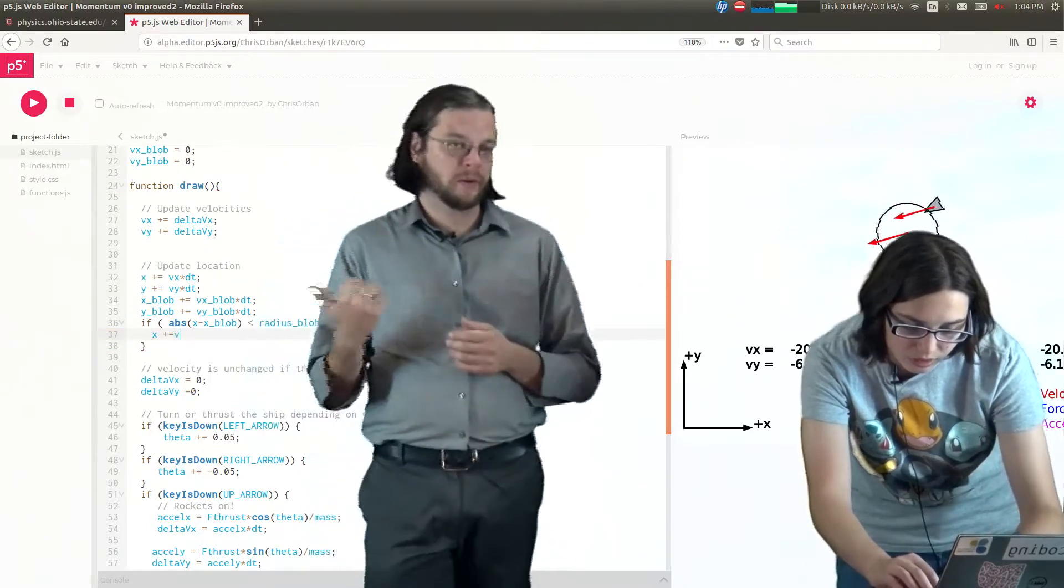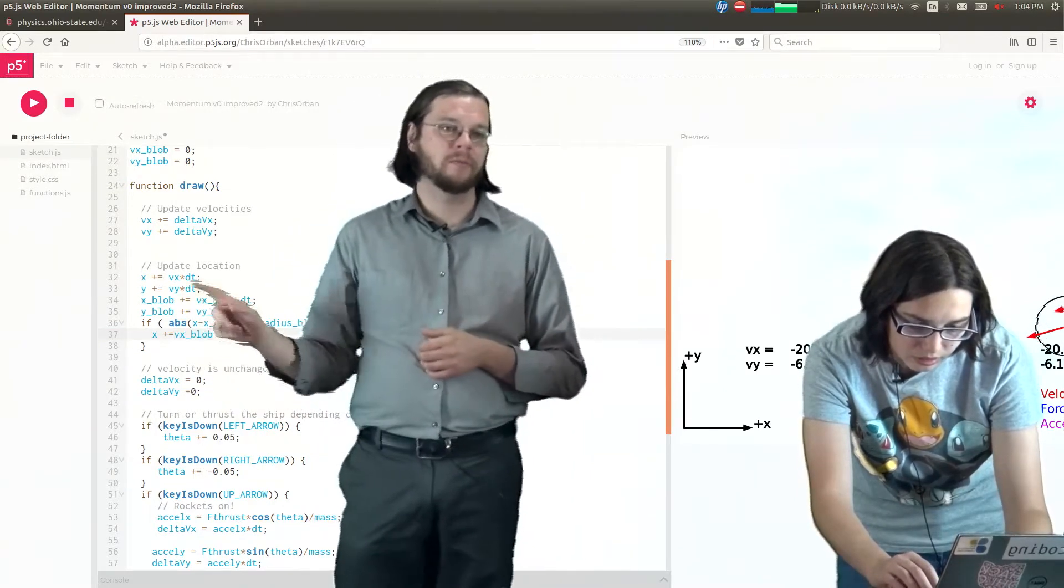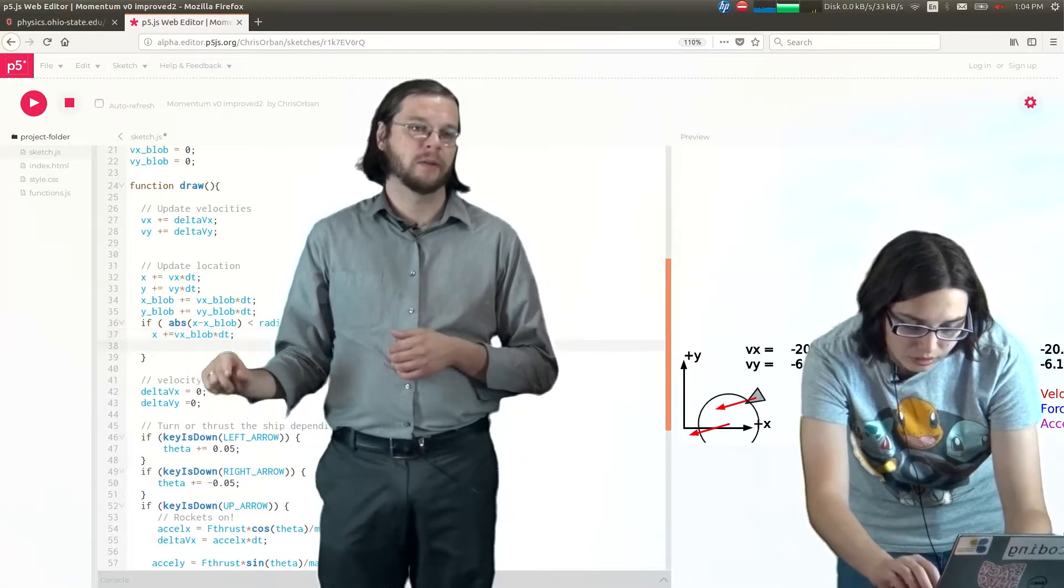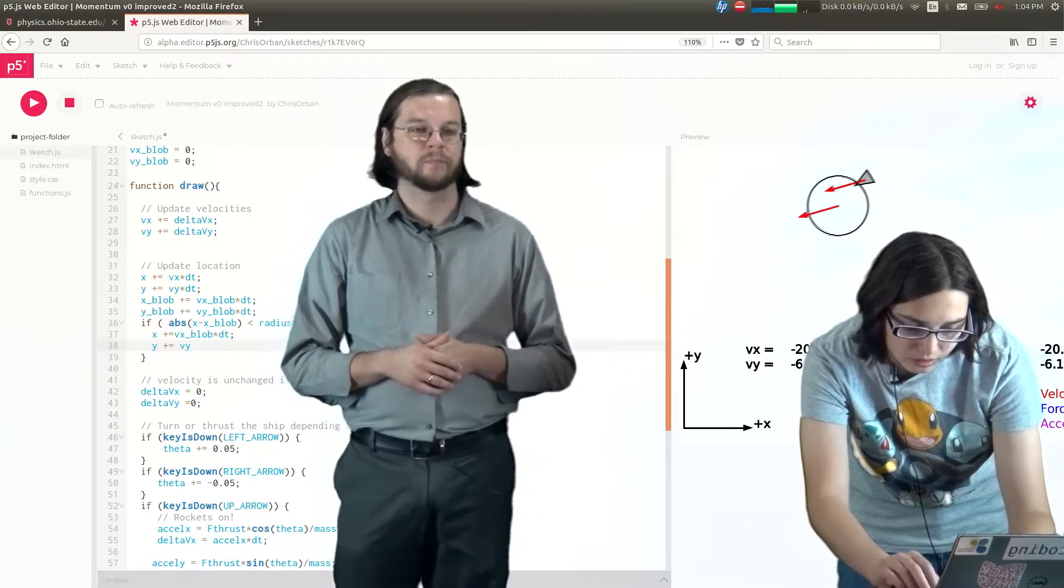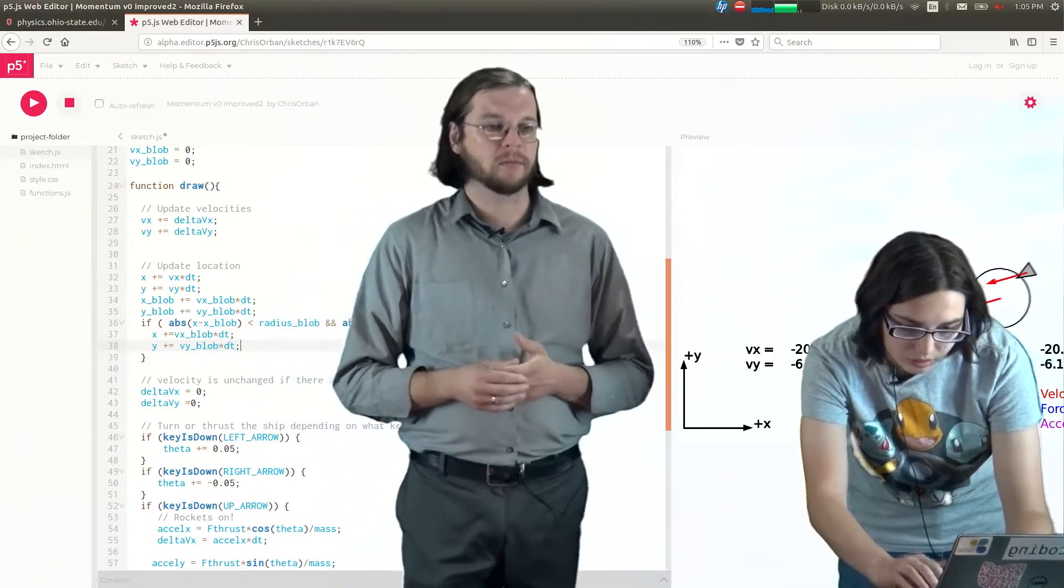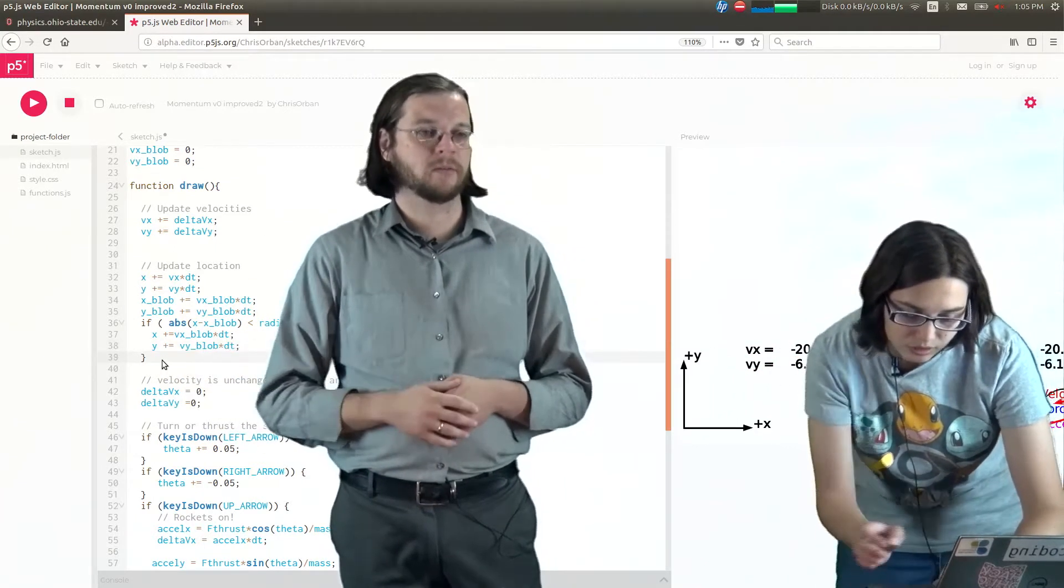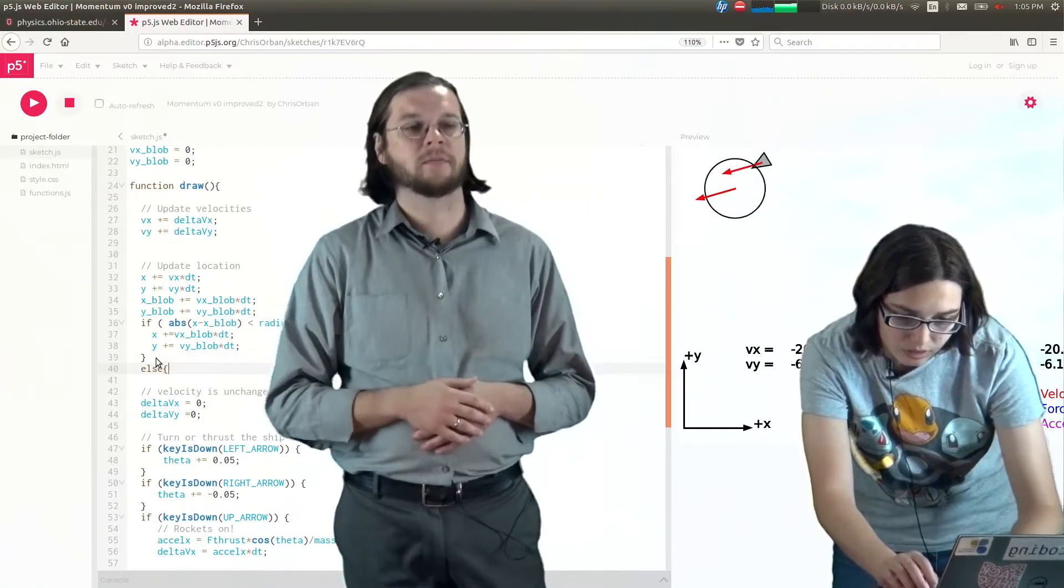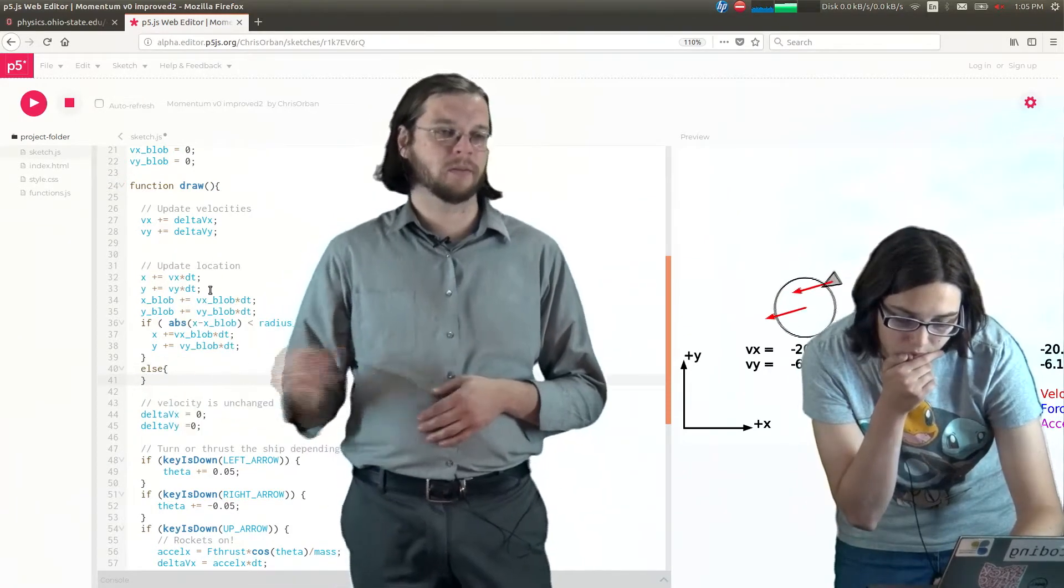Again, there's a couple different ways of doing this. This is how I would do it. So instead of using vx times dt we're going to use vx blob times dt. And the same thing for y. But we want to make sure that if they're not collided that it still does a normal thing, right? So what we actually have to do is we have to have an else statement. So if it's collided, then use this. But if it's not collided, else, do the normal stuff? Then, yeah. So we want to cut this out and paste it into there.